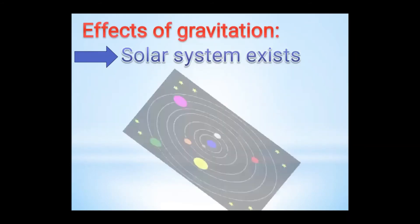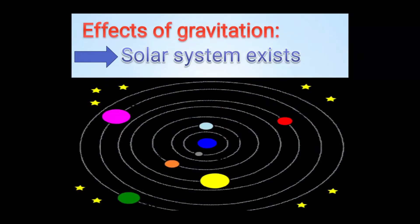Effects of Gravitation. Solar system exists due to gravitational force among the different planets and the sun.